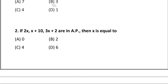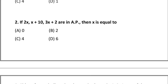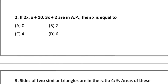Next question: if 2x, x + 10, and 3x + 2 are in AP, then x is equal to — option A: 0, option B: 2, option C: 4, option D: 6. Students, try to find the solutions for all these questions on your own; I'll be posting the key answers soon.